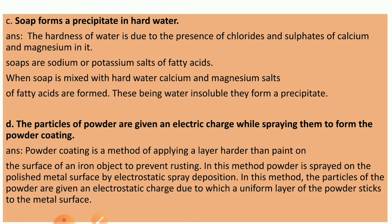D: The particles of powder are given an electric charge while spraying them to form a powder coating. Answer: Powder coating is a method of applying a layer harder than paint on the surface of an iron object to prevent rusting. In this method, the powder is sprayed on the polished metal surface by electrostatic spray deposition. The particles of powder are given an electrostatic charge, due to which a uniform layer of powder sticks to the metal surface.